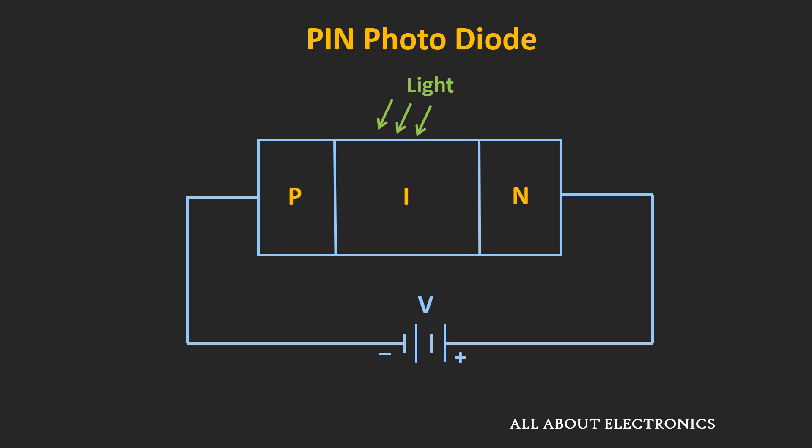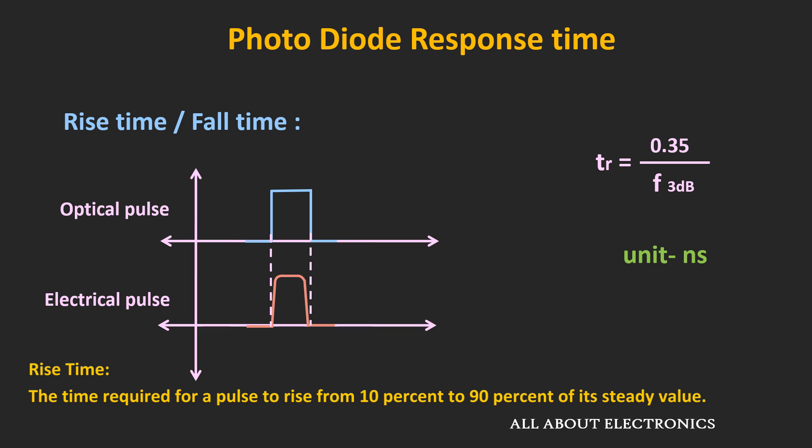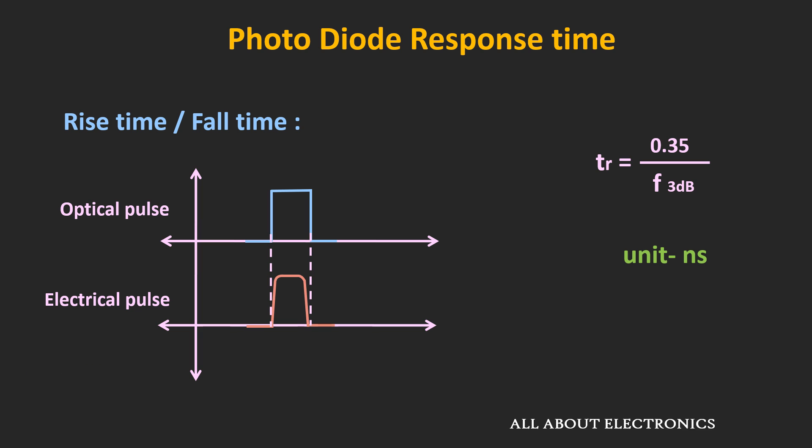Apart from responsivity, another key parameter is response time — how fast the photodiode is able to respond to an optical pulse. This is a very important parameter in fast switching applications, particularly in optical communications. The response time is represented using the rise time or fall time. The rise time is defined as 0.35 divided by the 3 dB frequency, where the 3 dB frequency is the frequency at which signal power becomes half. The rise time is typically represented in nanoseconds and depends mainly on the RC time constant of the circuit.